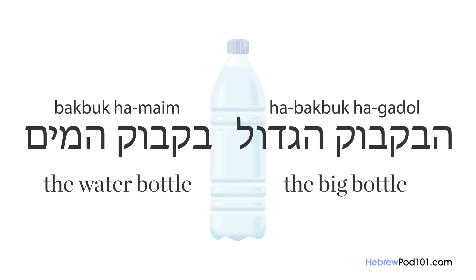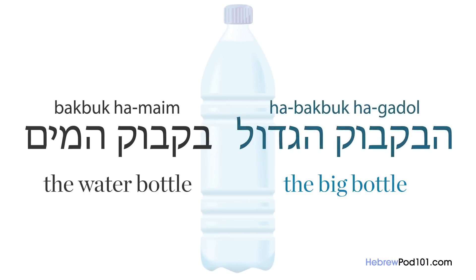Another rule that smichut alters is the prefix 'ha,' which means 'the.' When turning an indefinite noun into definite, we add 'ha' to the noun itself and also to its adjective. However, in smichut compounds, only the describing noun gets the prefix 'ha.' For example: 'bakbuk ha-maim' — the water bottle.